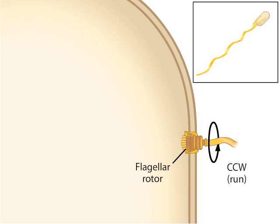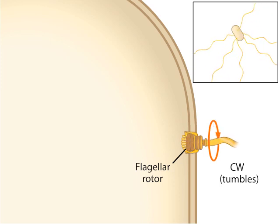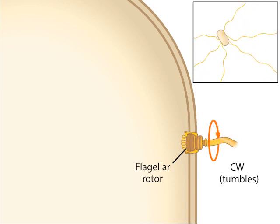The natural bias of a flagellar rotor is to turn in a counterclockwise rotation. However, the flagellum switches directions randomly at a particular rate, which is why the cell periodically tumbles.